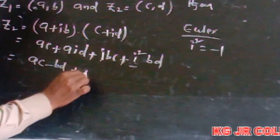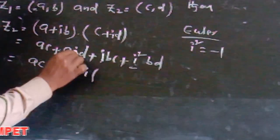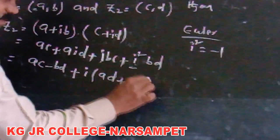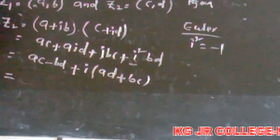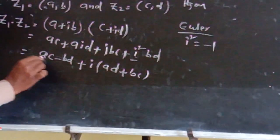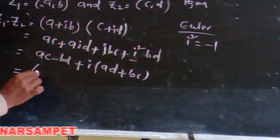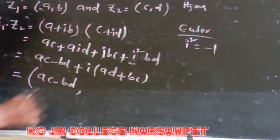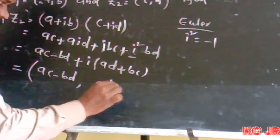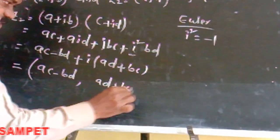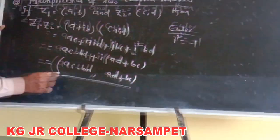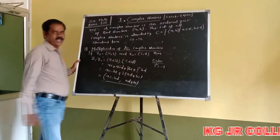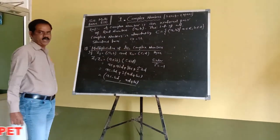Taking i as common, you get bc + ad. Its ordered pair form is (ac − bd, ad + bc). This is the concept of multiplication of two complex numbers.